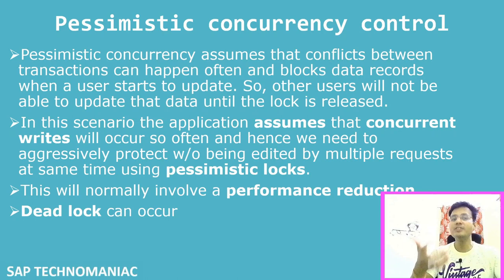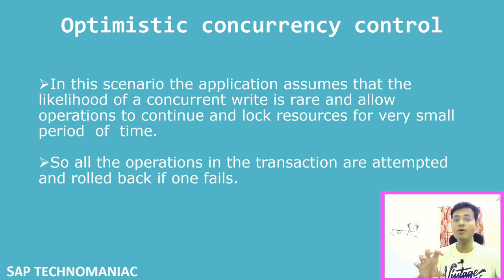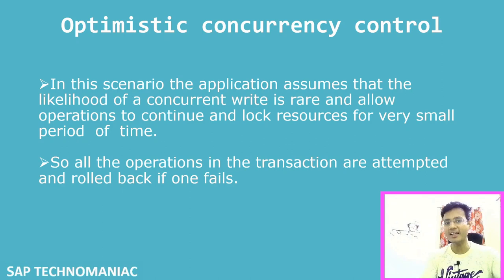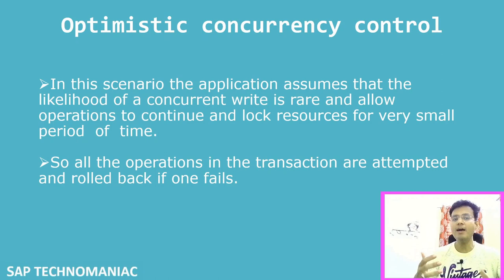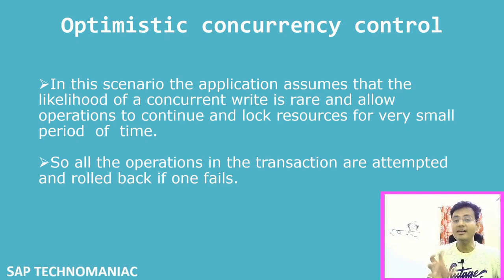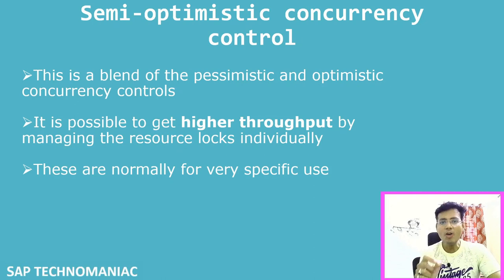The second kind is optimistic concurrency control. We are optimistic that there is very little chance another user will update the same data we are updating. So we do not put a lock initially — we read the data, update it, and only when we want to write to the database do we put the lock for a very minimal time. That is called optimistic concurrency control.